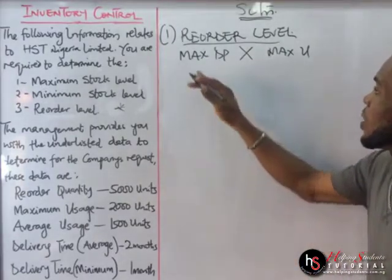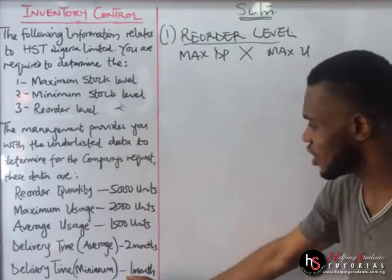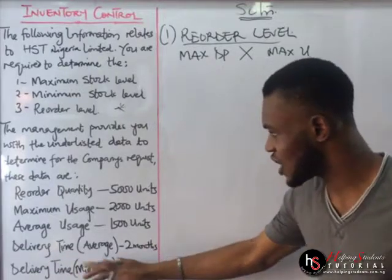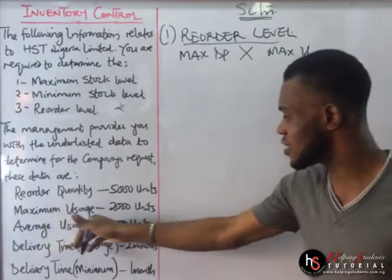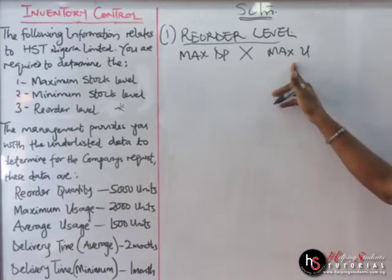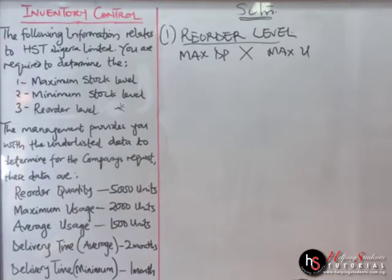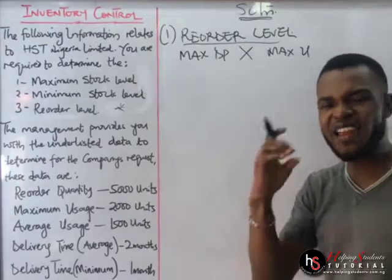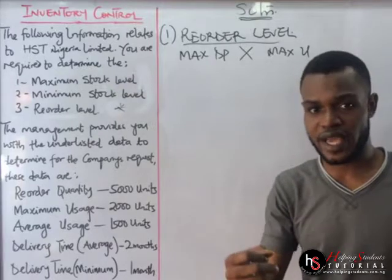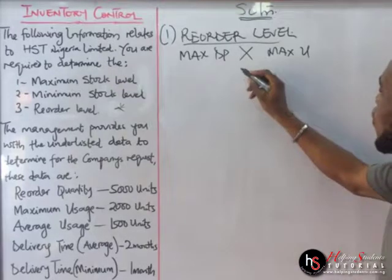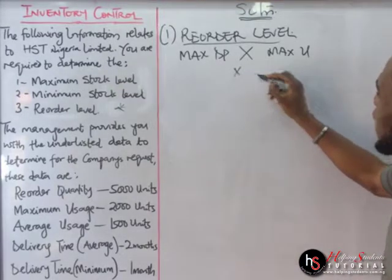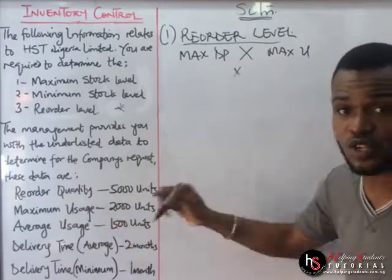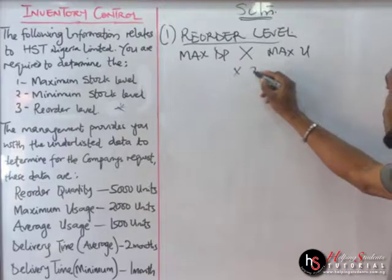What is the maximum delivery period in this question? We have delivery time minimum and delivery time average — there is no maximum given. We do have maximum usage, which is 2,000. Since the maximum delivery period value is not given, we use the average to get it. So we have 2,000 here for maximum usage.